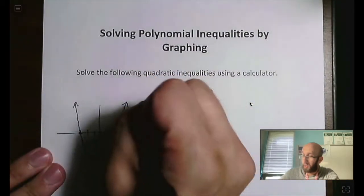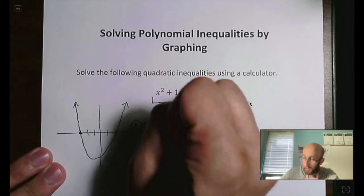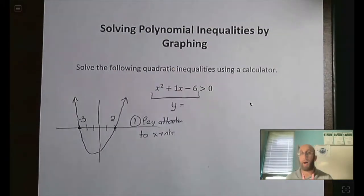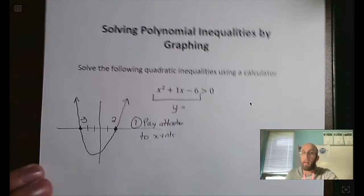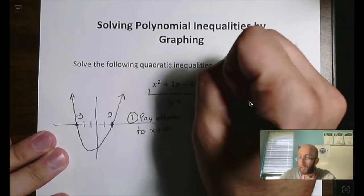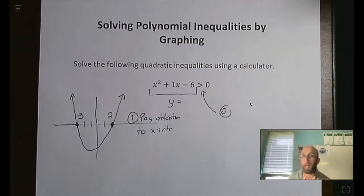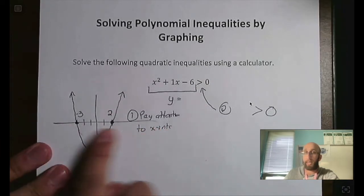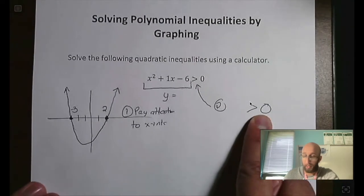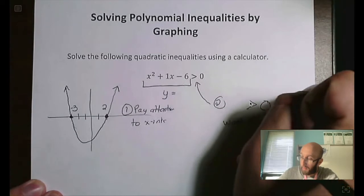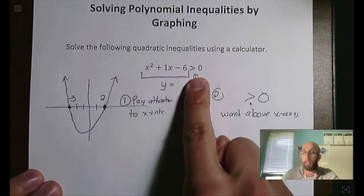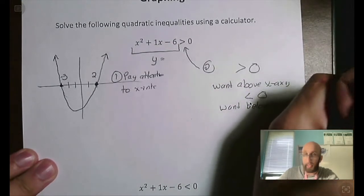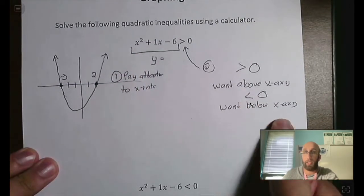The first thing to pay attention to is the x-intercepts, which were at negative 3 and positive 2. The second thing is to pay attention to the inequality. If we get a statement that is greater than 0, since the x-axis represents 0, that means we want everything above the x-axis. If we see less than 0, we want below the x-axis. So: greater than 0 means above the x-axis; less than 0 means below the x-axis.